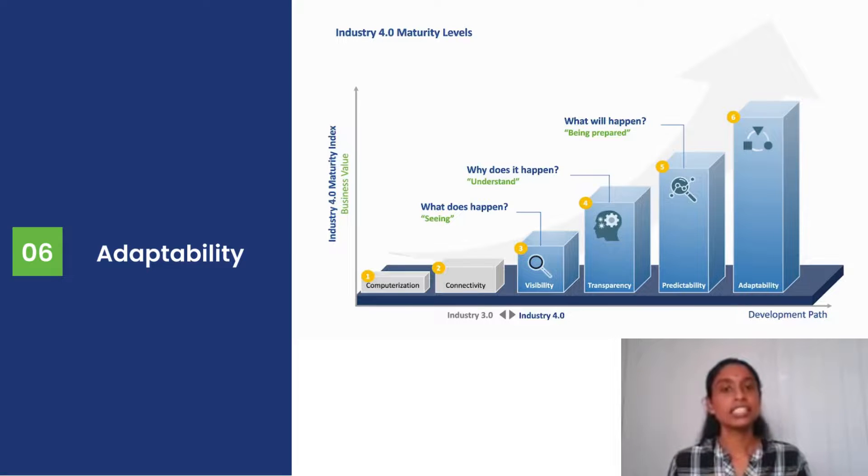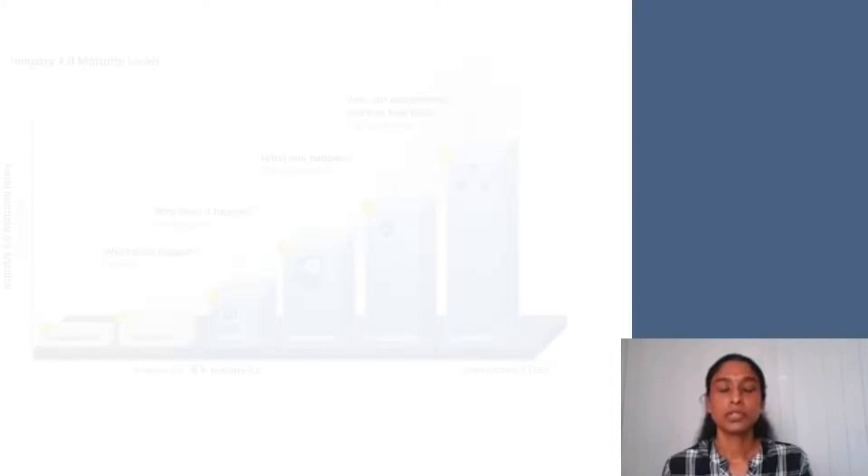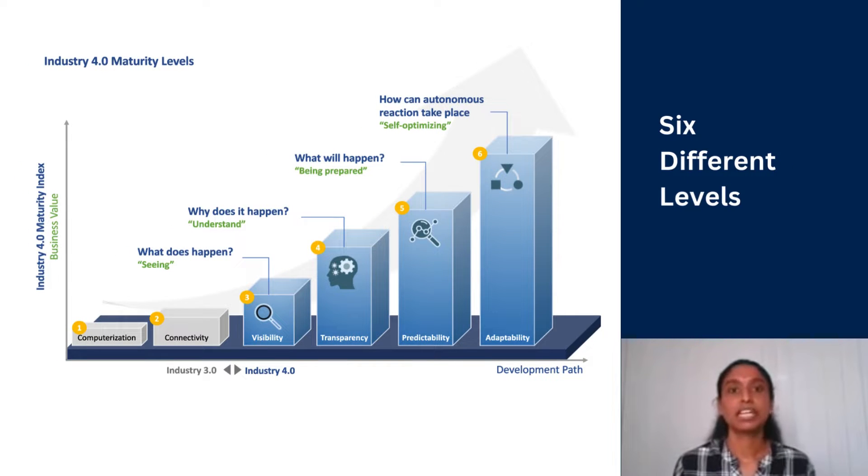These are the six different levels of Industry 4.0 where we can tell whether the organization is in the connectivity or visibility or transparency stage to understand the state of the organization. These are the six different levels of ACATECH. These different levels are being widely used and this is being used as a basic framework for studying the Industry 4.0 maturity level of an organization. Thank you.